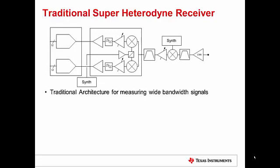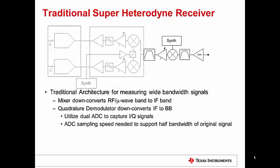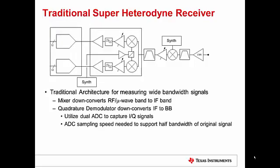This is the traditional super heterodyne receiver, and it's suitable for measuring wide bandwidth signals. A key aspect here is the mixer that down converts from either your RF band or your microwave band down to a fixed IF frequency, and then the quadrature demodulator, which would down convert from that IF to a fixed baseband.